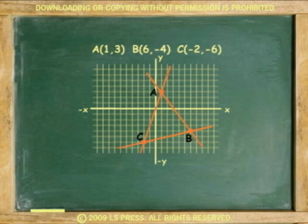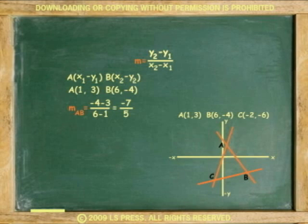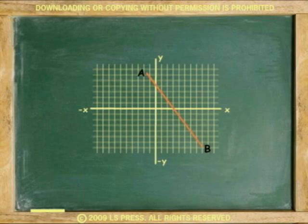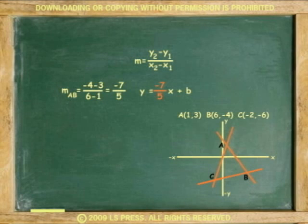We start with line AB using the slope equation. Negative 4 minus 3 over 6 minus 1. The slope is negative 4 minus 3 equals negative 7. 6 minus 1 equals 5. Or the slope is negative 7 over 5. And the y-intercept is 0, 4.3. Substituting the slope for m and the y-intercept for b, the slope-intercept equation is y equals negative 7 over 5 x plus 4.3.